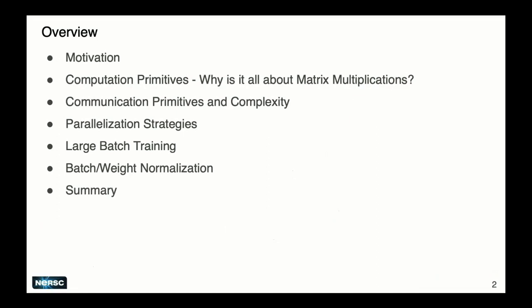I'll talk about communication complexities and how you can distribute training - the different methods of doing that. For that we need to talk about matrix multiplication, because it's basically all about that. I'll briefly cover parallelization strategies in the context of deep learning, then large batch training - what problems you run into and how to get convergence - and also accuracy improvements when doing distributed deep learning with small local batch sizes, such as what batch normalization can do for you.